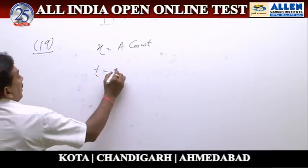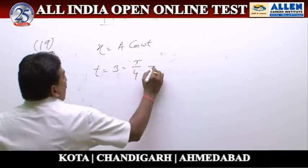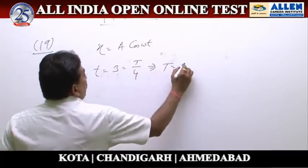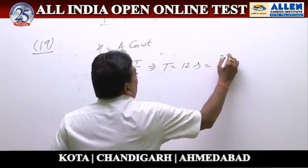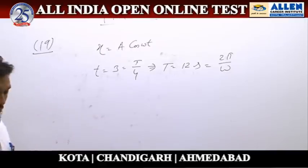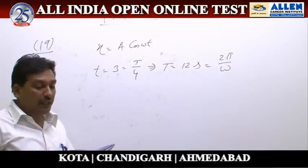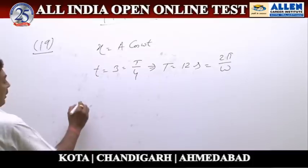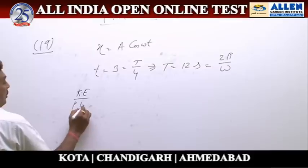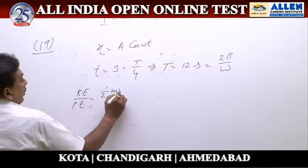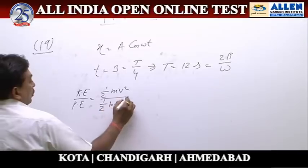So we can write t = 3, and that must equal T/4, which implies T = 12 seconds, equal to 2π/ω. Now we have to calculate the ratio of kinetic energy to potential energy. The required ratio KE/PE equals (1/2 m v²) divided by (1/2 k x²).